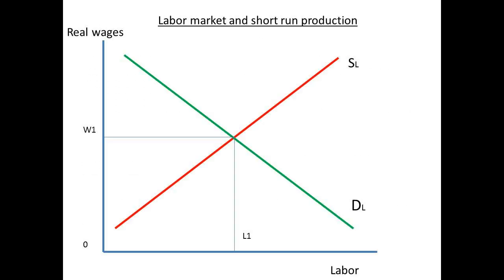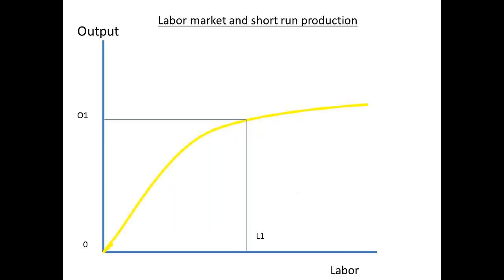Here the labour market is seen to be in equilibrium at a wage of W1 and a level of employment of L1. Here we show total output using different quantities of labour. Note that continually increasing labour will eventually produce smaller and smaller increases in output.